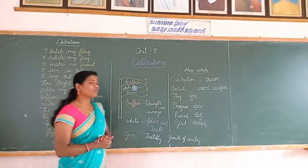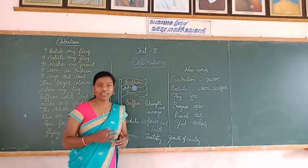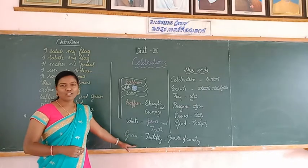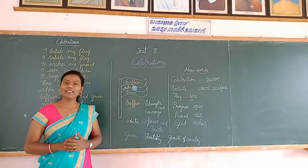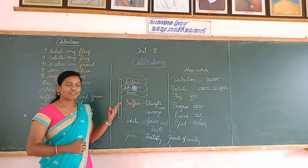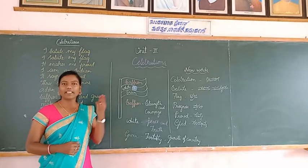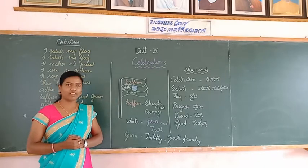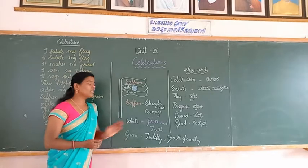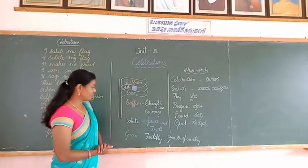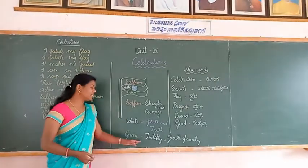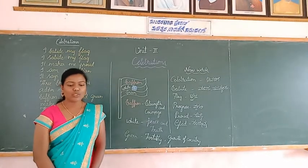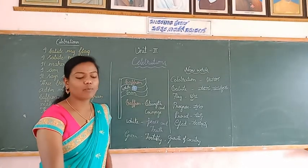So our national flag has three colors: saffron, white, and green. Saffron color indicates strength and courage of our country. White color indicates peace and truth. And green color indicates fertility and growth of our country. So let us start the poem.